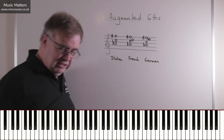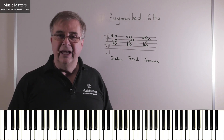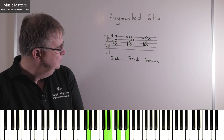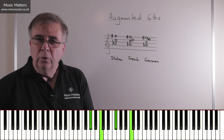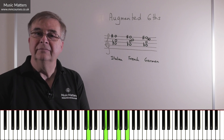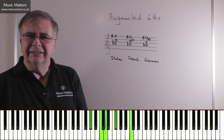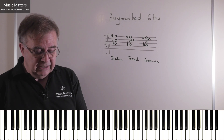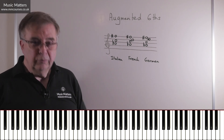Where do these chords tend to go after you've played them? They tend to move on to chord V, or to I six-four and then V. Taking an Italian sixth in C major, you might go Italian six → I six-four → V, or Italian six straight to V. The same is true of the French and German. With the French sixth you get that augmented fourth adding colour as it moves to V, or I six-four then V. This works the same way in the minor key.